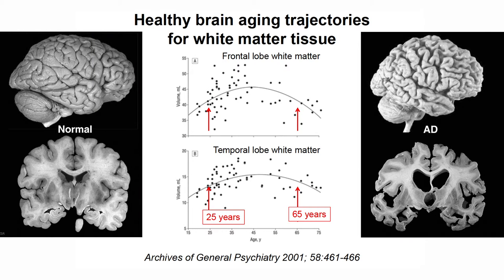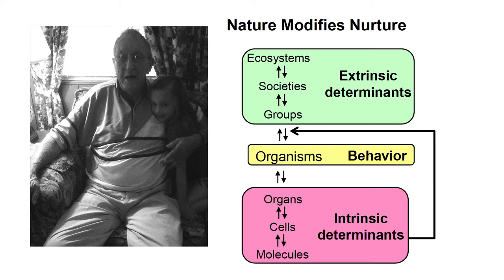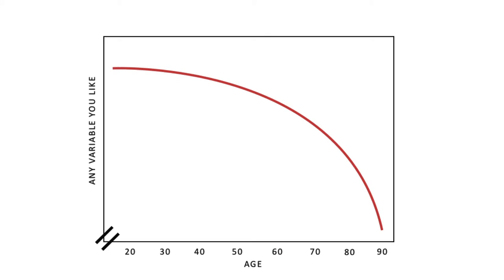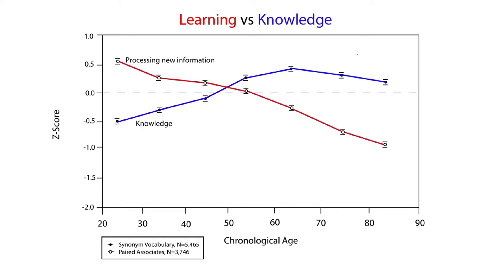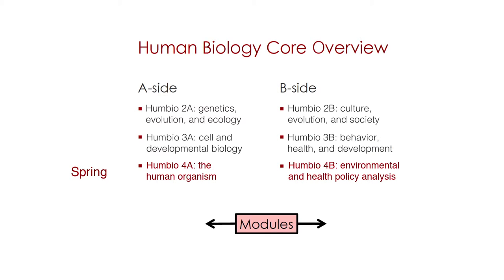The quarter ends with an examination of the aging process, particularly in the brain. The elderly are vulnerable to dementia and cancer as a result of cellular processes caused by genetic mutation and cytotoxins, but also because of environmental factors human societies have created themselves. Although the brain and body break down naturally, Dr. Karstensen emphasizes how healthy behaviors like exercise and social community can offset and delay the aging process. 4a: The Human Organism. 4b: Environmental and Health Policy Analysis.